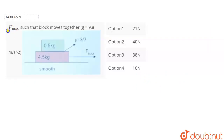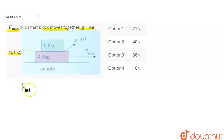In this question, we have given Fmax such that the block moves together. Use G equals to 9.8 meter per second square. We had to find out the maximum force Fmax. There are two blocks — one is 0.5 kg mass and one is 4.5 kg mass.